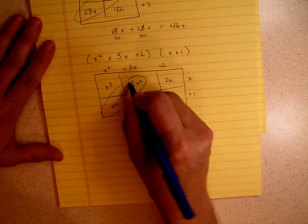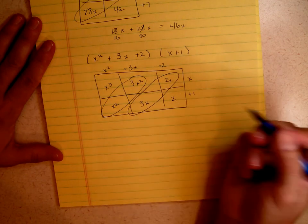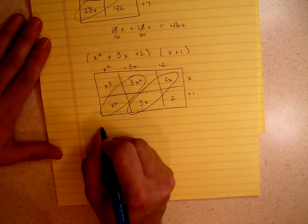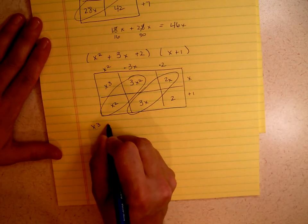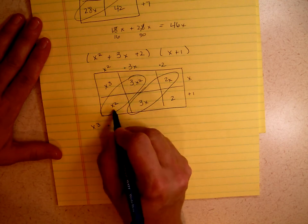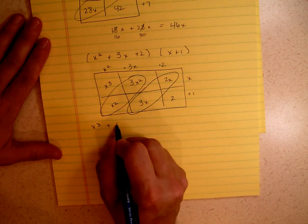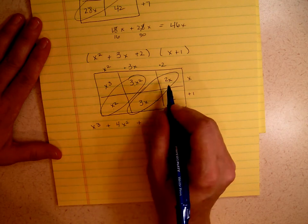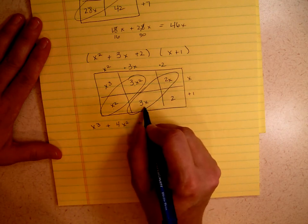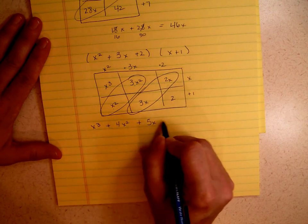And in this case, you should see two things that you can put together. So our answer is x cubed plus 3x squared and 1x squared is 4x squared plus 2x and 3x is 5x plus 2.